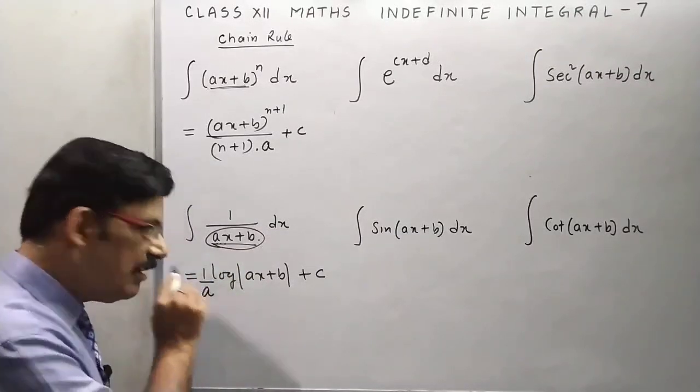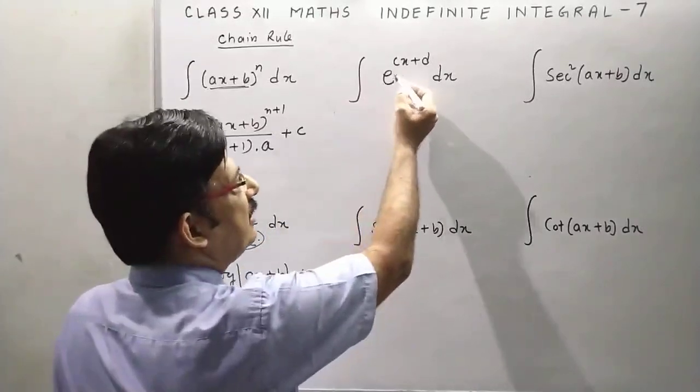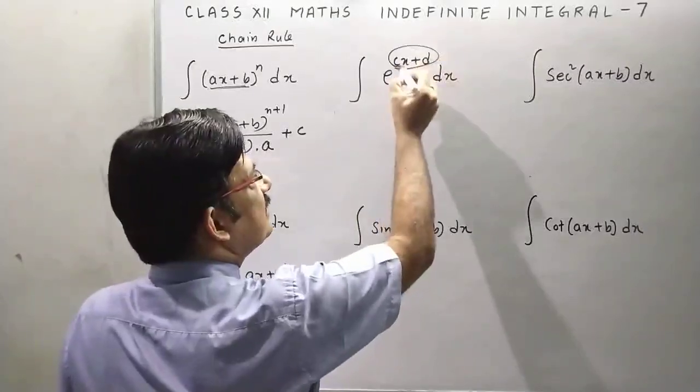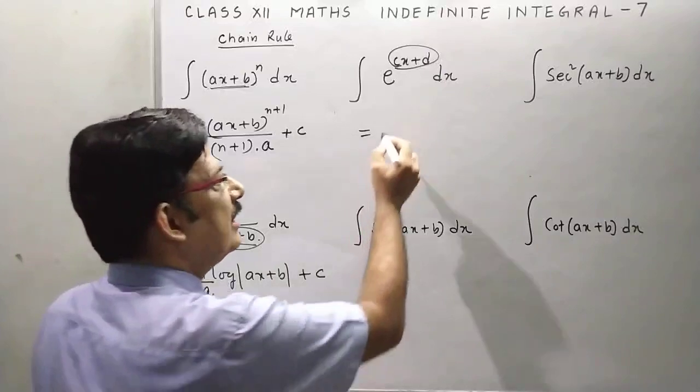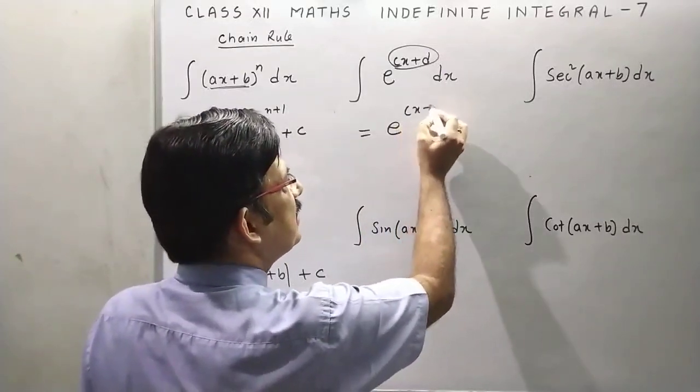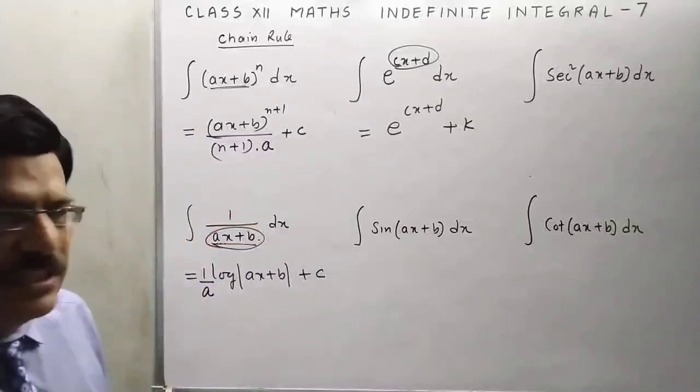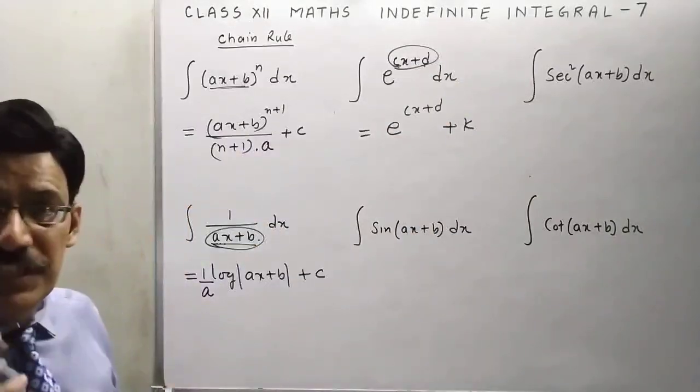Third is e to the power cx plus d. Suppose this as x. We have formula for exponential function, again exponential cx plus d plus k. K is constant of integration. Now we have to differentiate this and we get c, which is constant, so divide by c.